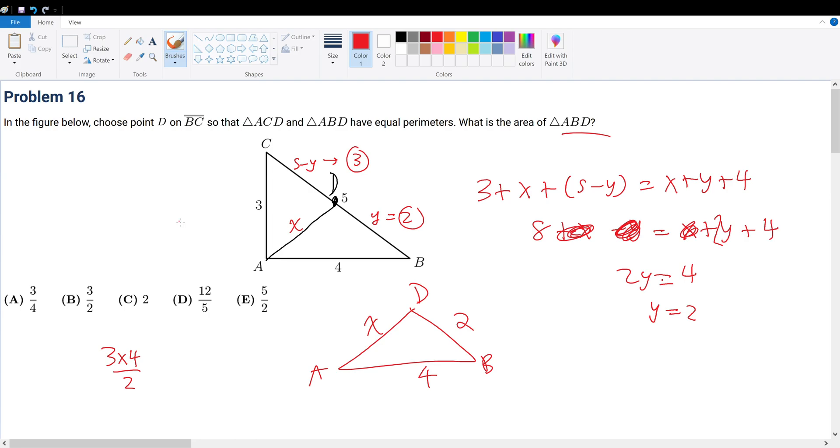The area of this, we cannot use Heron's formula, because remember, Heron's formula involves a semi-perimeter. A semi-perimeter will give you 6 plus X divided by 2. That's a bit too complex. Let's think of another way.